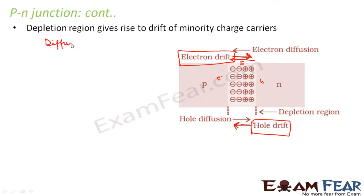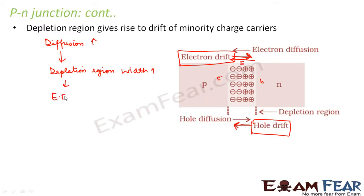Diffusion happens whenever we connect a p-type and n-type together because of the difference in concentration of electrons and holes, and diffusion gives rise to the depletion region. As the depletion region width increases, the electric field strength also increases, and as a result the drift current also increases. When a P-N junction is formed, there are two categories of currents: diffusion current due to majority charge carriers, and drift current due to minority charge carriers.